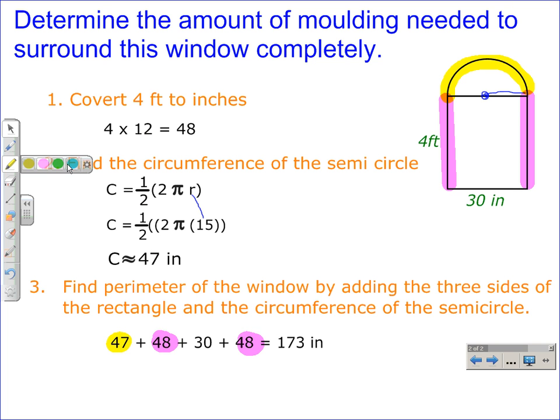And finally, the 30 inches here represents the bottom of the window. And so when we find the sum of these four numbers, 47 + 48 + 30 + 48, that gives us a total of 173 inches of molding that you're going to need to surround that window.